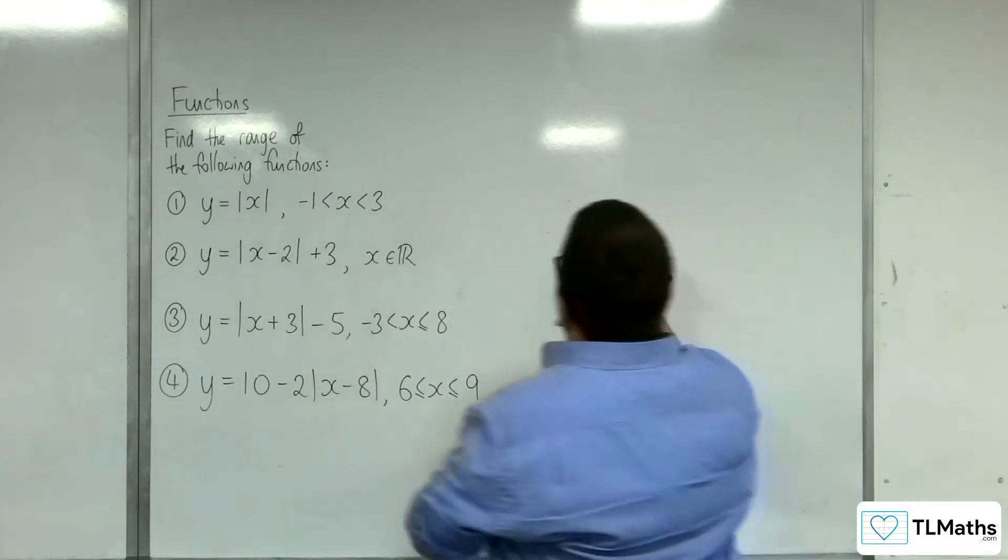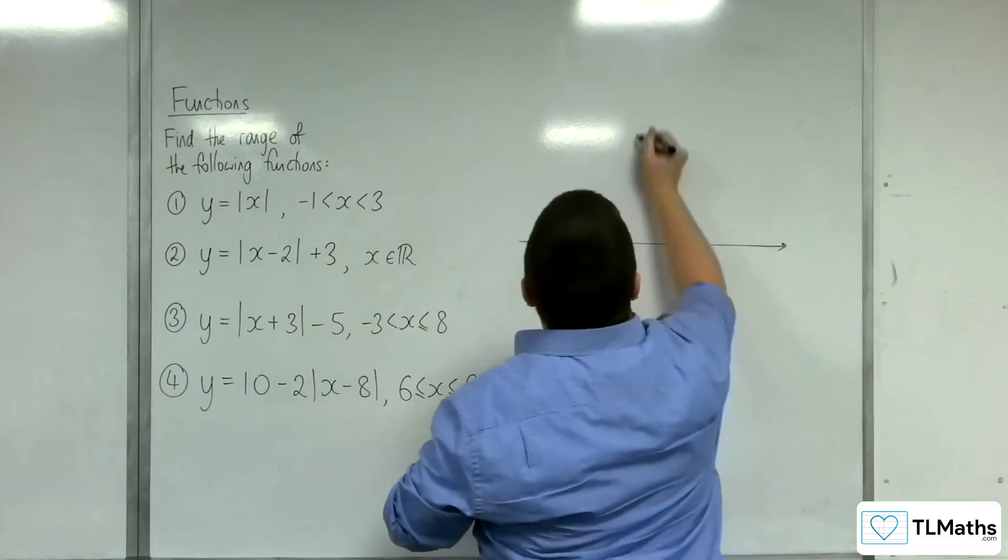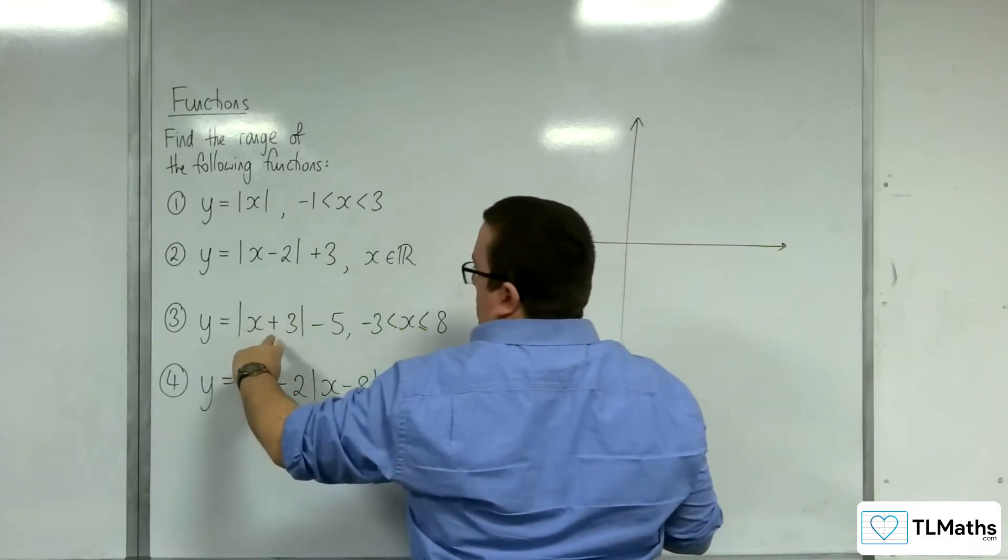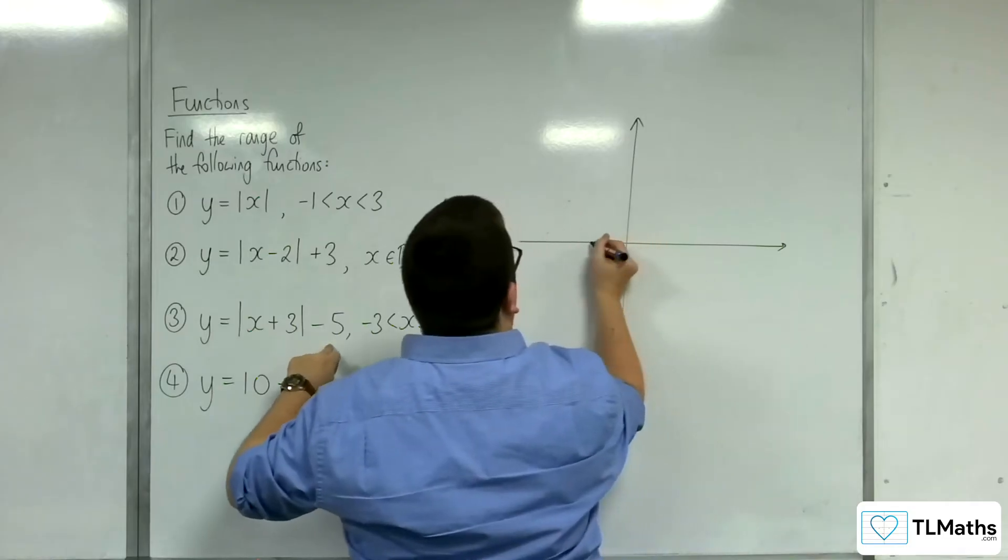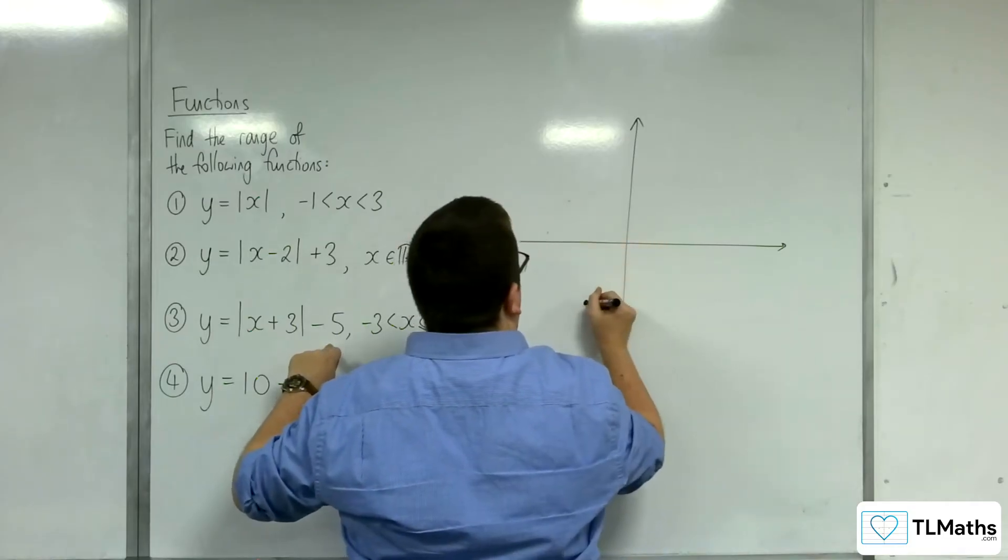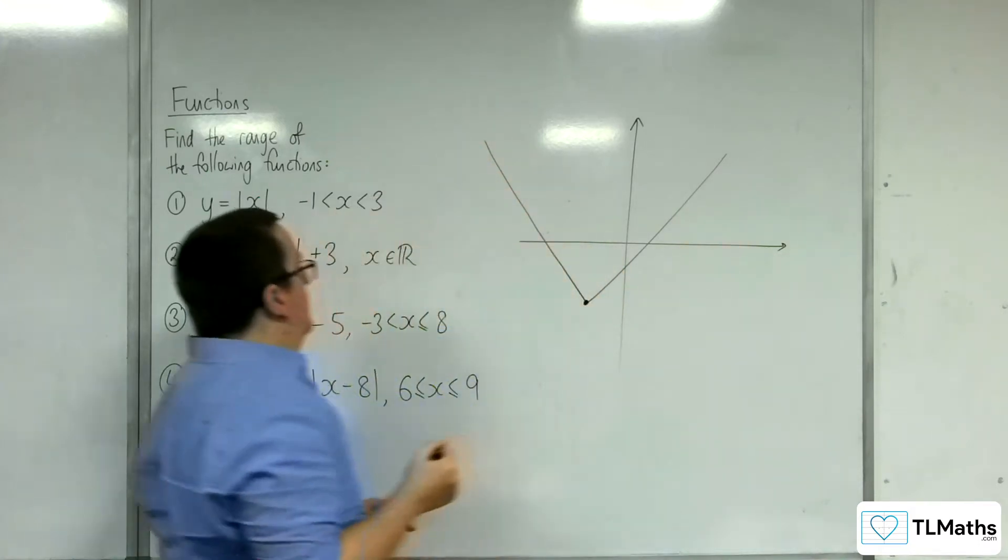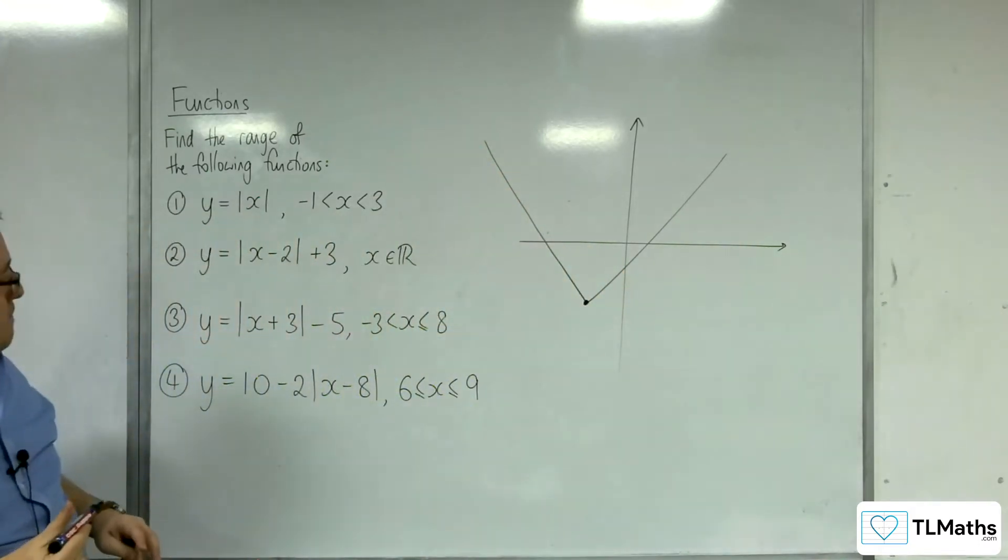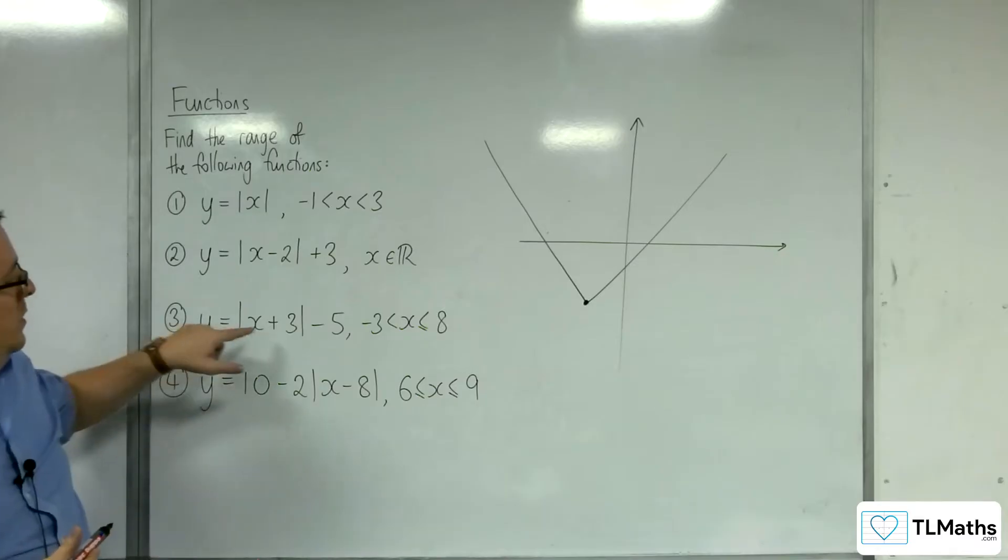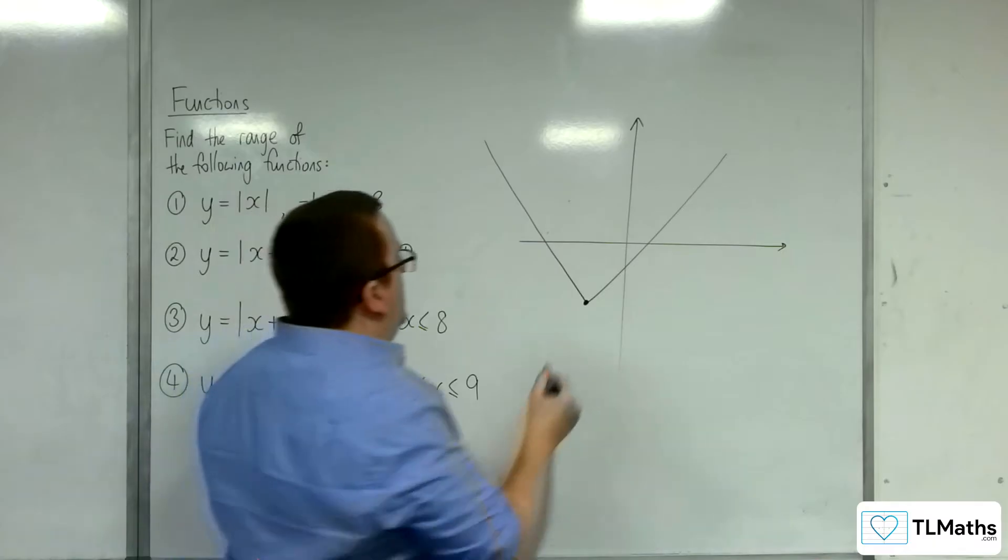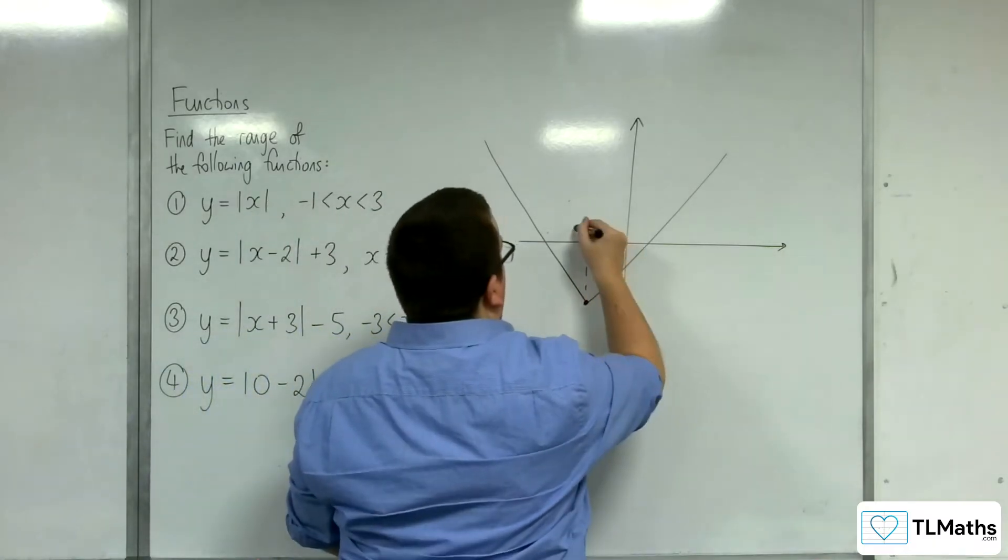Third one. So the vertex is at minus 3, minus 5. So minus 3, minus 5, so somewhere down here. Then we're going to have our V shape. Okay, so we're going between minus 3 and 8. Now remember, that's minus 3.